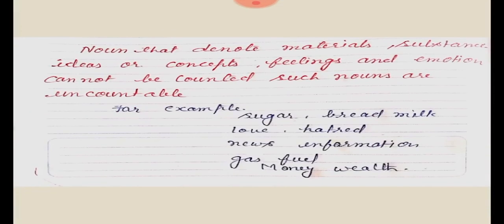Now look at uncountable noun. Nouns that denote material, substance, ideas or concepts, feelings and emotions cannot be counted — such nouns are uncountable nouns. Examples: sugar, bread, milk, love, hatred, news, information, gas, fuel, money, wealth. We can't count these words, so they are uncountable nouns.